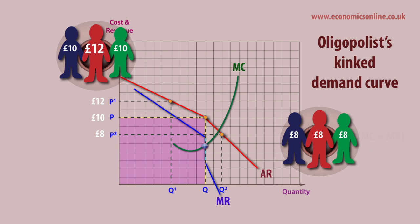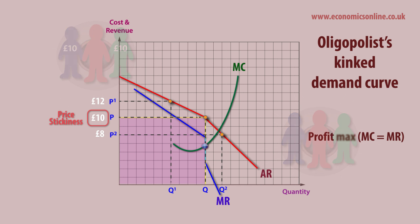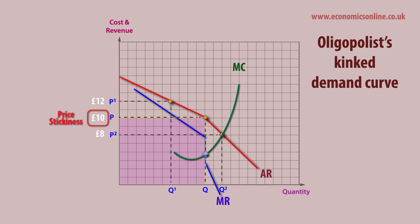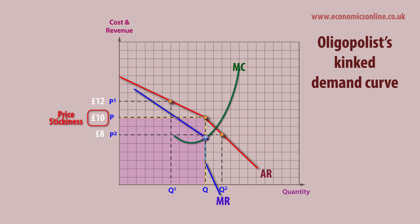As marginal revenue falls at twice the rate of average revenue, the marginal revenue curve is split. Any change in costs does not alter the oligopolist's profit-maximizing position. Hence price tends to stick at one price. The kinked demand curve illustrates the significance of interdependence, as well as explaining the tendency for price stickiness.